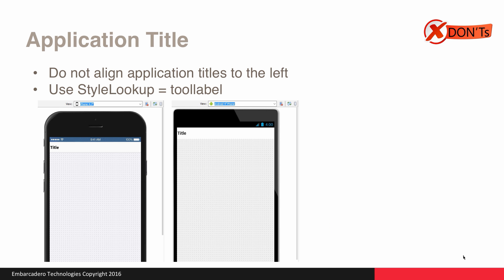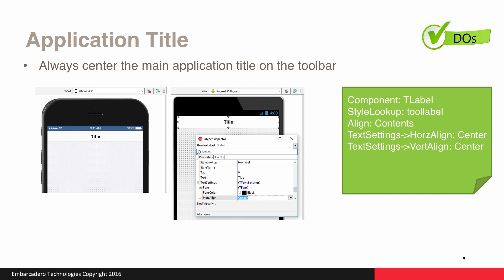You should never align the application title to the left — it should always be aligned to Center by default. You should use StyleLookup equals ToolLabel as the styling property for your application title. To summarize: use T-Label, look up ToolLabel, align to Contents, and then set the Horizontal and Vertical Alignment for the text to Center.